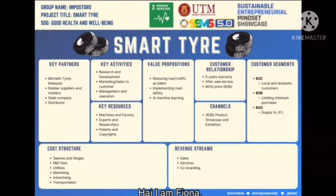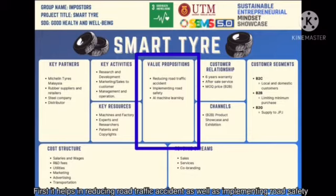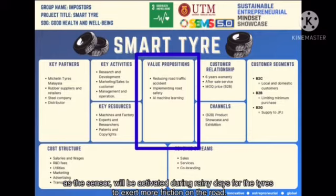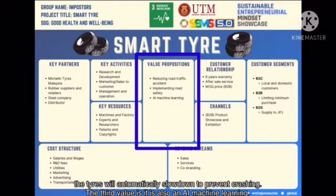Hi, I am Fiona. Now we will proceed with the value proposition. First, it helps in reducing road traffic accidents as well as implementing road safety — the sensor will be activated during rainy days for better efficiency on the road. And when there is an object or vehicle ahead within 3 metres distance, the tyres will automatically slow down to prevent crashing.